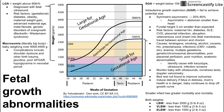Complications of having a big baby usually arise during delivery. These include shoulder dystocia or other birth trauma, jaundice, poor APGAR scores, and hypoglycemia in the neonatal period. Hypoglycemia is usually associated with diabetes and gestational diabetes, but a macrosomic baby is also at increased risk for hypoglycemia even in the absence of diabetes.